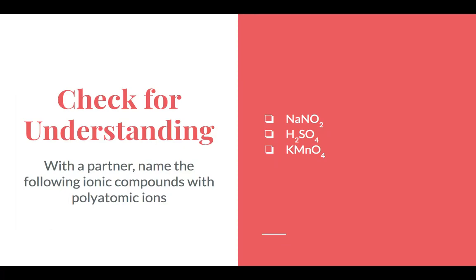Using the table in your process page, go ahead right now and try these three — write them in your notes, but don't forget to hit pause. Coming back together: NaNO2 is sodium nitrite. The second one is hydrogen sulfate. And then K as the cation with MnO4 as the polyatomic — this one is potassium permanganate. Give yourself a star on all the ones you did get right.